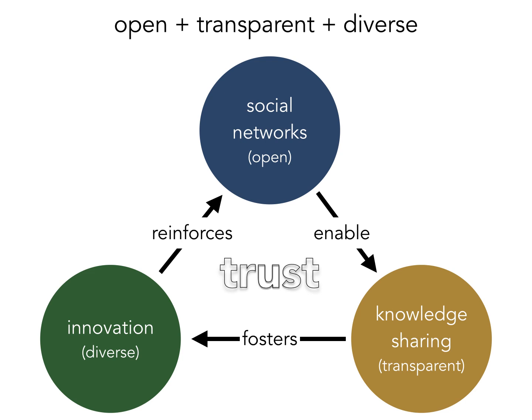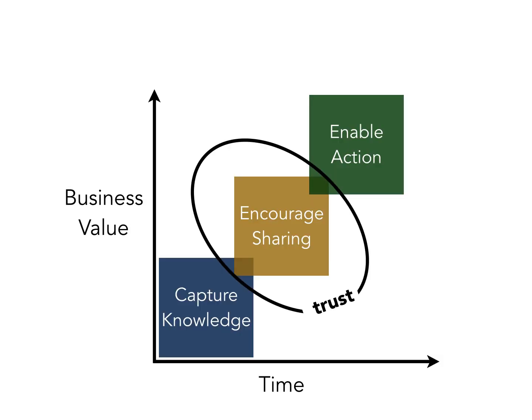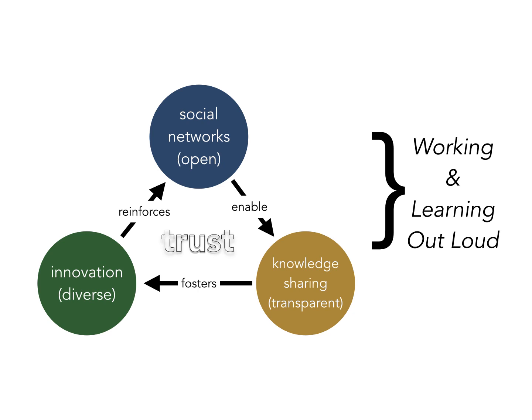Research shows that an effective knowledge network is open, transparent, and diverse. Social networks are by nature open. They can enable knowledge sharing, which in turn fosters a diversity of ideas and opinions necessary for innovation. Organizations that enable this cycle build trust. Research also shows that trust is a necessary element in sharing complex knowledge. From a business perspective, capturing knowledge is only the first step in creating value. People need to share their knowledge, which requires trust in order to enable some action, like developing a new product. Without trust, there is no sharing and little chance of creating the emergent work practices needed in a complex world. Organizational learning professionals should focus their efforts on encouraging knowledge sharing. Practices such as learning and working out loud are necessary components of any workplace learning strategy.